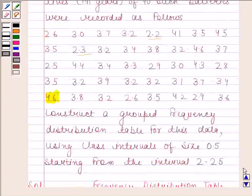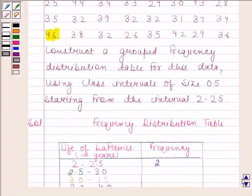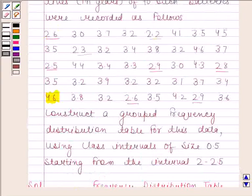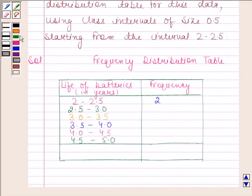Find the number of values included in the interval 2.5 to 3.0. The values are 2.6, 2.5, 2.9, 2.8, 2.6, and 2.9. So there are 6 values covered in this interval.